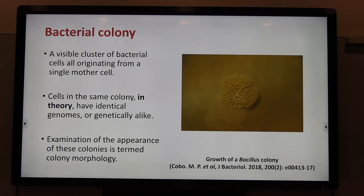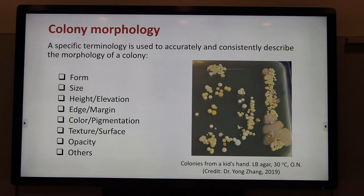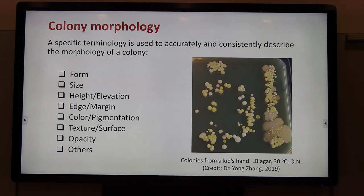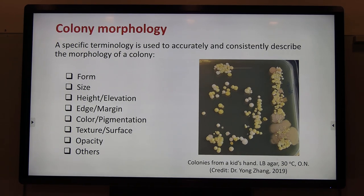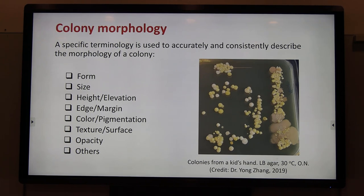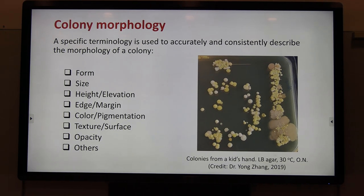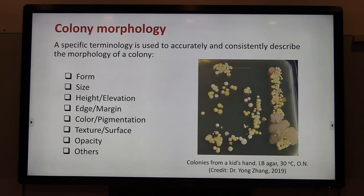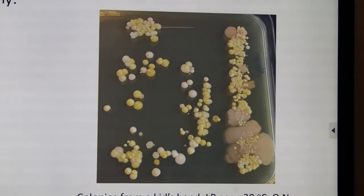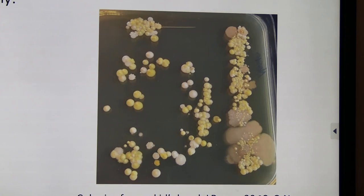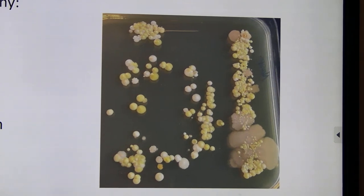The examination of the appearance of colonies is termed colony morphology. Describing colony morphology is the first part of identifying and characterizing a bacterial culture, because individual bacterial species often form colonies of defined size or appearance. As you can see from this photo, colonies of different colors, forms, or sizes actually belong to different species. A specific terminology is therefore used to accurately and consistently describe the morphology of a colony.